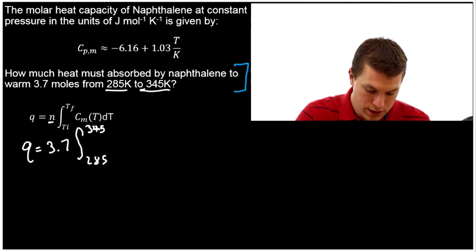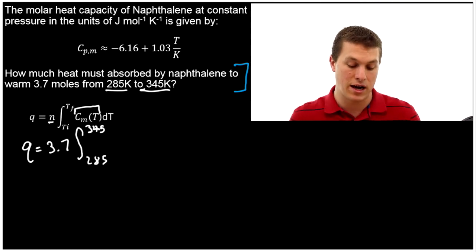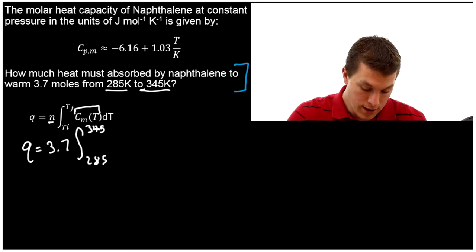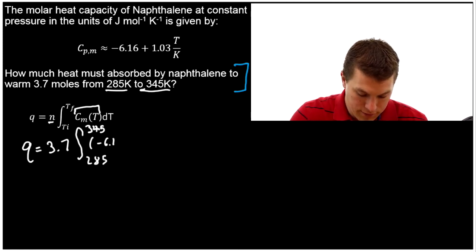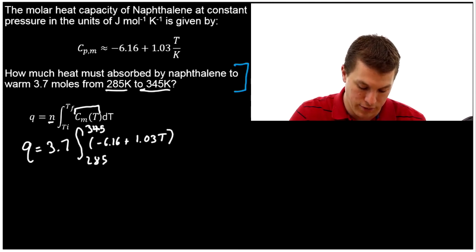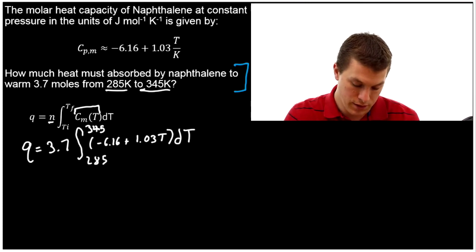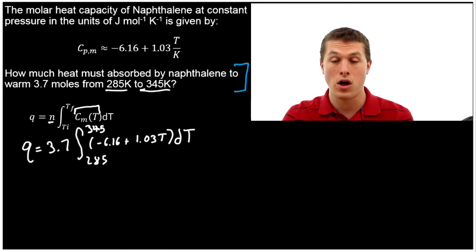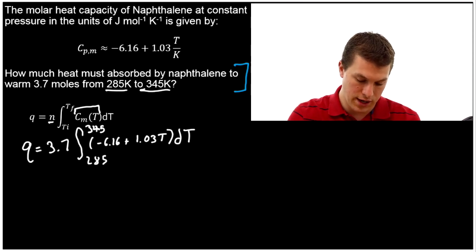And then what we're going to do is we're going to plug in our Cp,m. Notice that this is our molar heat capacity. And it actually doesn't matter if it's Cp or Cv, this equation will work. And so what I'm going to plug in there is -6.16 and then + 1.03. And I'm just going to put T there. I'm going to drop that Kelvin thing. Remember that's just reminding us that we're going to divide by Kelvin to get our units right. But it doesn't actually affect the math you're going to do down here. Alright, so that's a pretty easy integral. And you'll find that all of these heat capacity equations are easy integrals. They're all polynomials.